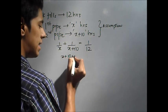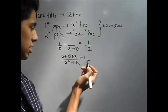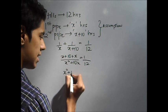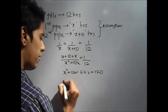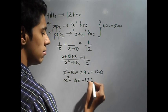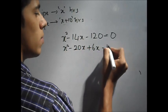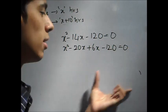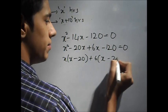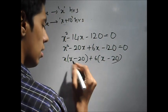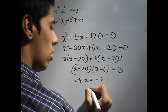This becomes x plus 10 plus x upon x square plus 10x is equal to 1 over 12. Now simplifying this, you should get x square plus 10x is equal to 24x plus 120. So simplifying it, x square minus 14x minus 120 is equal to 0. Now let's factorize it. So it becomes x square minus 20x plus 6x minus 120. Now factorization, you should know by now. So x into x minus 20 plus 6 into x minus 20. So x minus 20 and x plus 6.